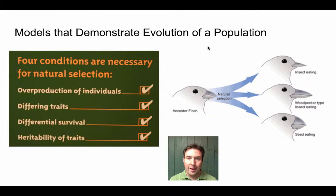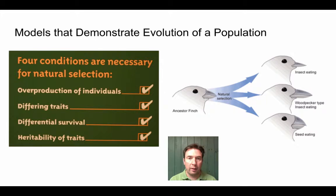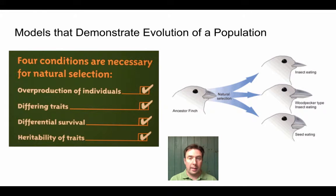Hi everybody, this is Mr. Matthew, and this is video four of four in our biological evolution series. In this video, we're going to talk about models that demonstrate evolution of a population — specifically, we're going to look at how populations shift, or what are the causes that cause populations to shift over time.